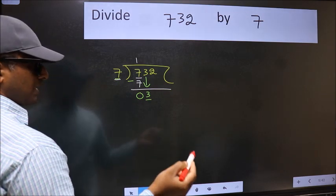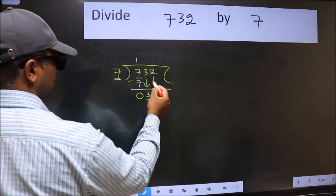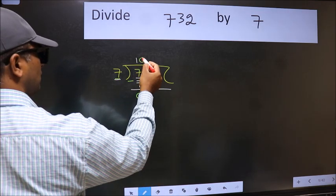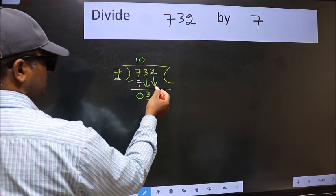So we should bring down the second number. And the rule to bring down the second number is we should put 0 here. Then only we can bring this number down.